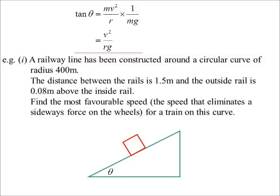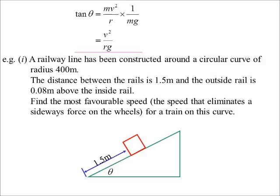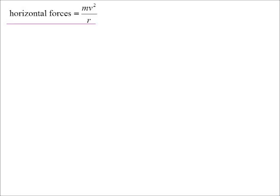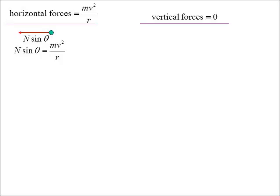Here's the diagram. The tracks are 1.5 metres apart along the bank, and the outer rail is 0.08 metres above the inner rail. We put in our forces: the normal force and the force due to gravity. Resolving forces the same way, we need theta for the normal force. Horizontal forces: N sin θ = mv²/r. Vertical forces — we don't want to derail — N cos θ = mg.